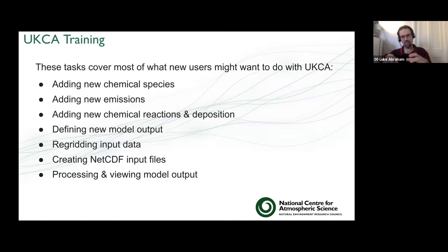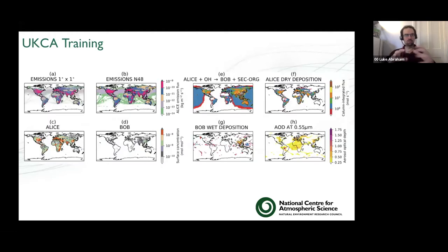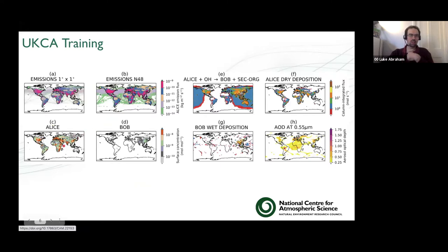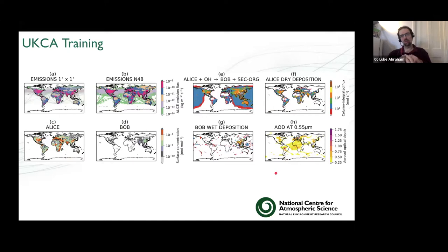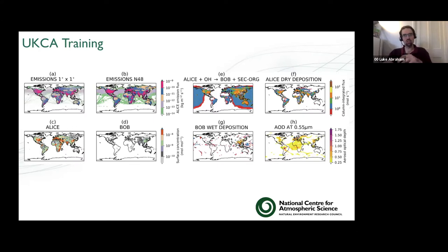It takes a few days to go through all the different tasks. You can see here how these various things go — taking emissions from one degree down to N48, what Alice looks like, what Bob looks like after the reaction, the flux through that reaction, the dry deposition of Alice, the wet deposition of Bob, and the AOD with this change. It essentially covers everything a new UKCA user might want to do — they might just be interested in adding reactions or new species, or usually a combination of these things.